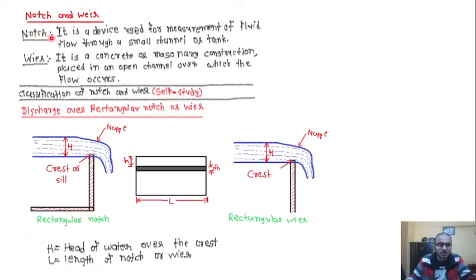First is notch — it is a device used for measurement of flow through a small channel or tank. Second is a weir — it is a concrete or masonry construction placed in an open channel over which the flow occurs. The classification of notch and weir was given as a self-study topic.